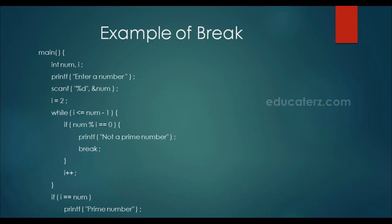Here is one example of the break statement where we want to find out whether a given number is prime or not. We ask for the number and read it using scanf. We start i as 2 and check the condition till i is less than or equal to the number minus 1. Inside the loop we check that if we divide the number by i and the remainder is 0, then we can conclude the number is not prime and we don't need to go for further iterations. As soon as the number becomes divisible by some other number, we execute break, which makes control jump directly out of the while loop.